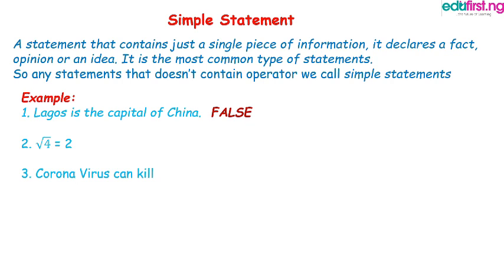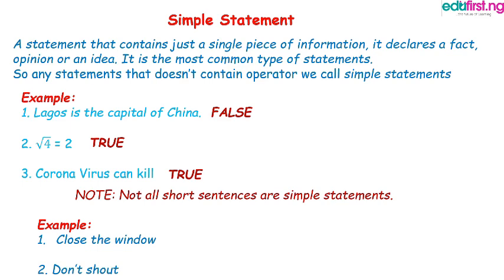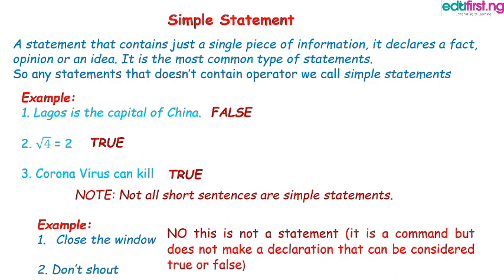Number 3: Coronavirus can kill. It is a simple logical statement because it does not have an operator. You notice that the examples I'm giving are short. But remember, not all short sentences are simple statements. For example, 'close the window' and 'don't shout' — these are short sentences, but they are not logical statements and they are not simple logical statements. Why? Because they are just commands. You can't say if they are either true or false.